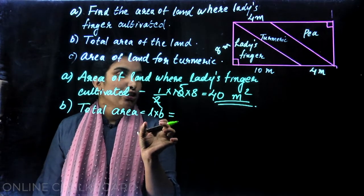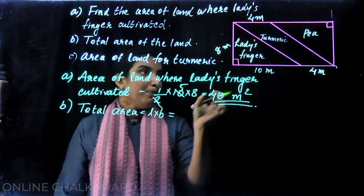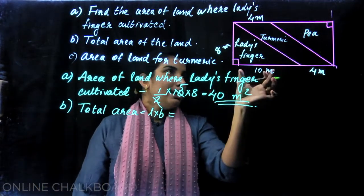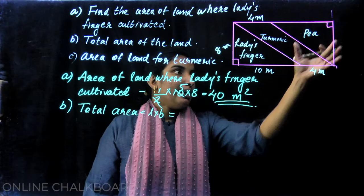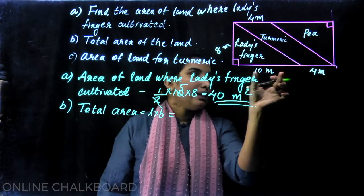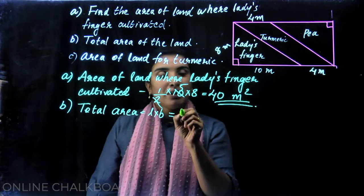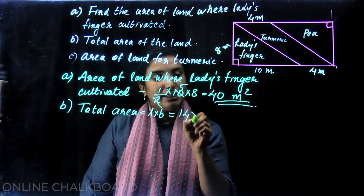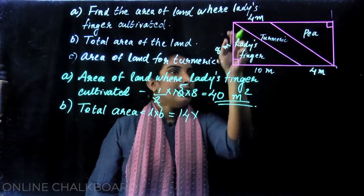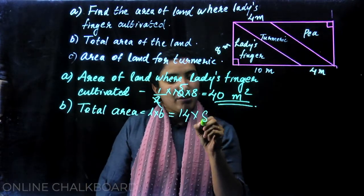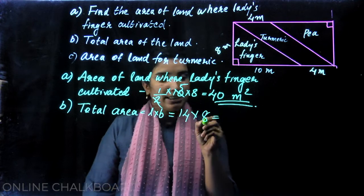Length into breadth: 10 plus 4 is 14, into breadth. So 14 into breadth gives the total rectangular area.